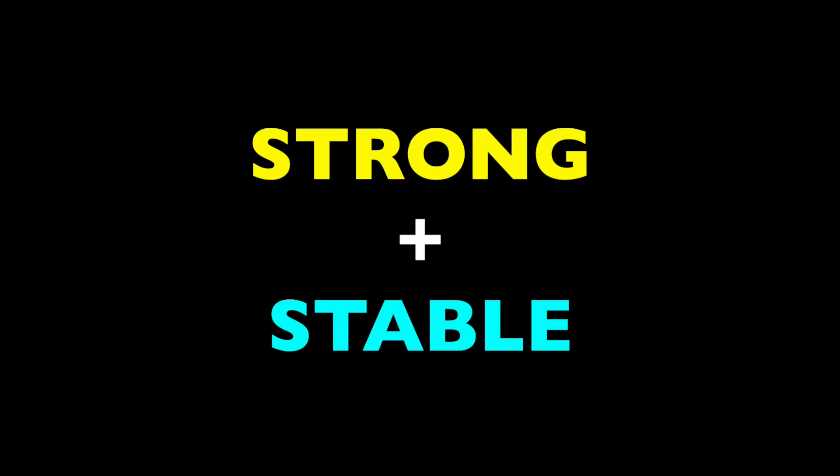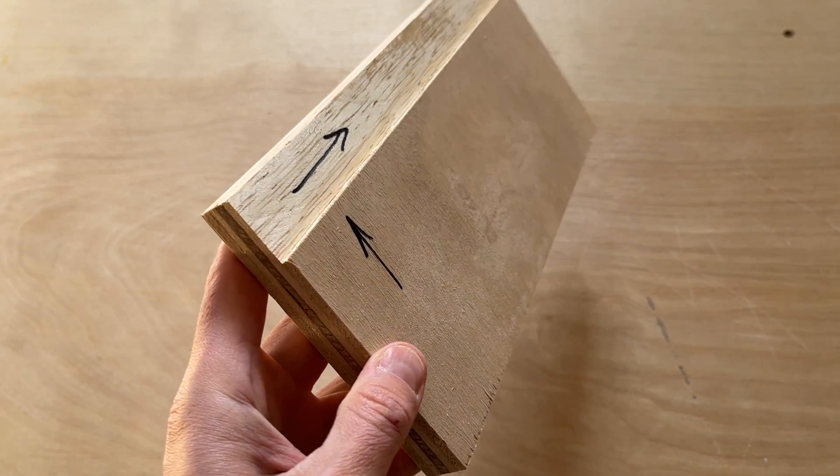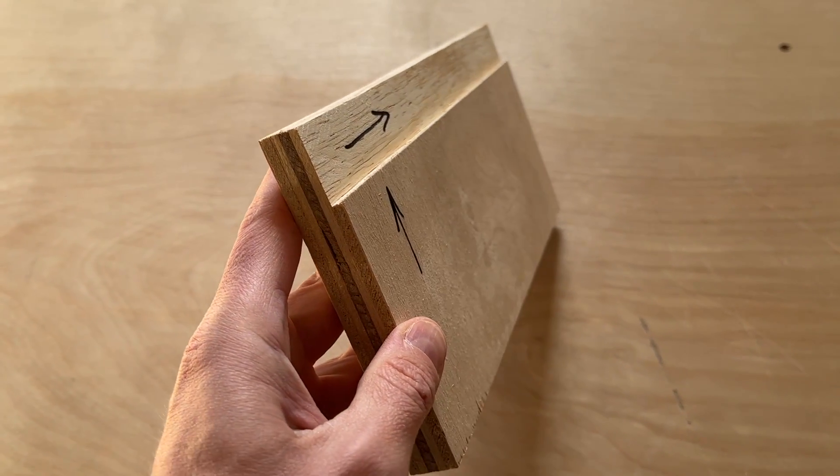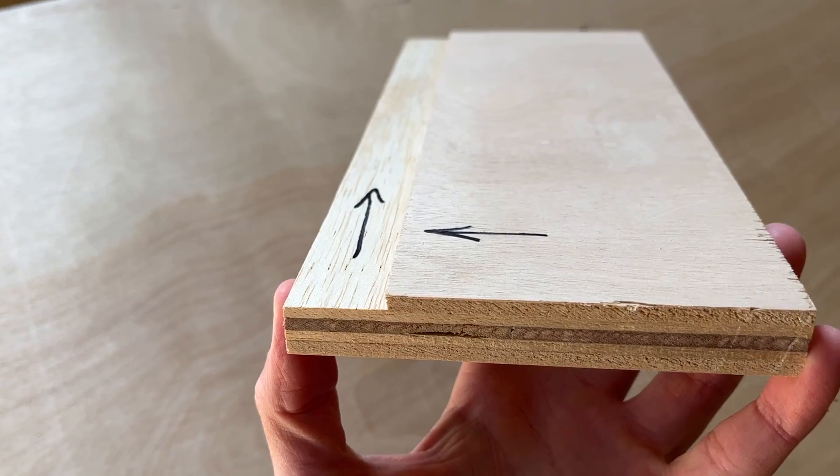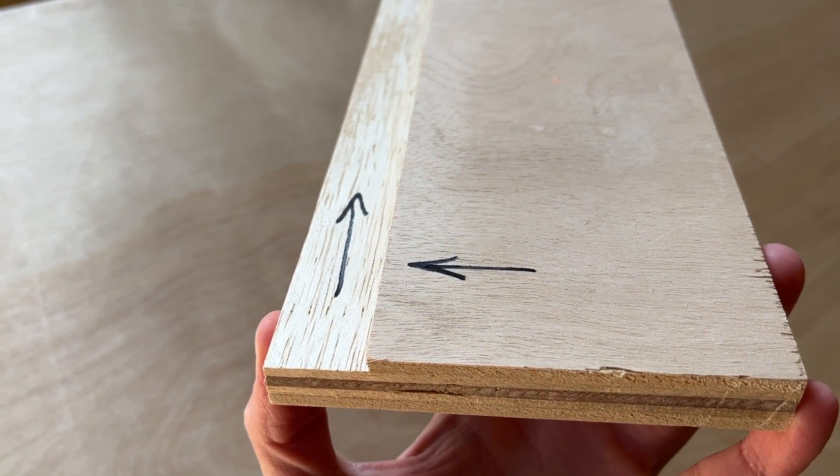But plywood has many other benefits too. For instance, it's actually very strong and stable. The various layers are glued in alternating directions — 90 degrees to one another — so any tendency or weakness in one layer is counteracted by the layer above or below. Furthermore, because of these alternating layers, plywood is not prone to splitting, whereas the long linear grain of dimensional lumber can create natural fault lines in the wood that will cause splitting in certain boards.